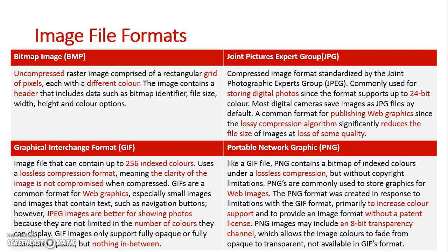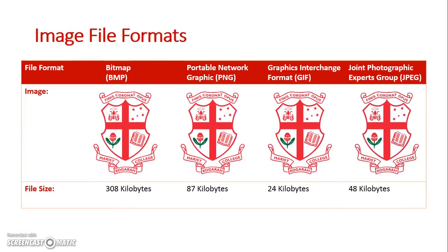That's an outline of the four different types of images. Let's look at an image saved in all four formats — here's the crest of Morris College Coggera. In its original form it is 308 kilobytes in an uncompressed bitmap format. In a PNG format it is 87 kilobytes, with more colors than a GIF and saved in a lossless format, retaining data about its original state. In a GIF format it is at its lowest file size — its highest compression — at 24 kilobytes, but with the least amount of colors.